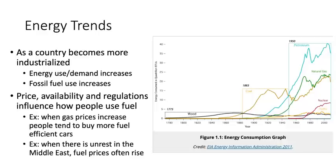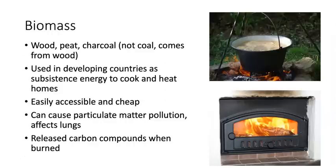We also see changes in price, availability, and government regulations based on how fuel is used over time. For example, if gas prices increase, we might see people buy more fuel-efficient cars and a drop in oil or petroleum use. When there's unrest in the Middle East, like the oil crisis of the 1970s, fuel prices often rise with that unrest.